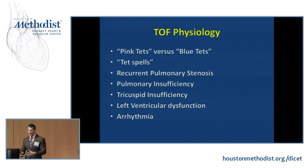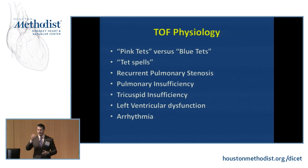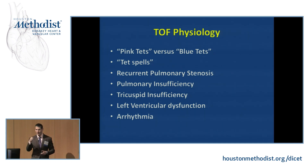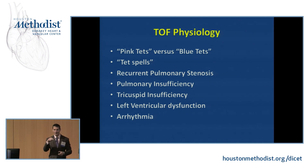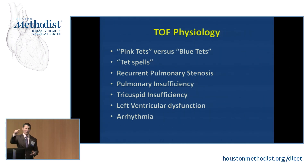As right ventricular pressures go up and if you develop tricuspid regurgitation, the right atrium may enlarge, and any time you have a big boggy right atrium you're predisposed to atrial arrhythmias. In addition, as a result of the surgical repair in childhood — cutting across the right ventricular outflow tract and into the right ventricular myocardium — any time you have a scar on ventricular myocardium, there's the potential for an isthmus of slowed conduction, a substrate for reentry, which means you could develop ventricular tachycardia originating in the right ventricular outflow tract right where that scar is.